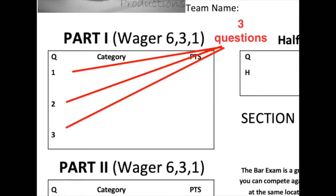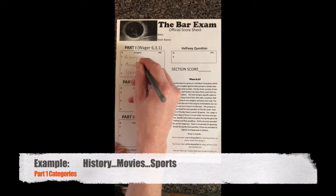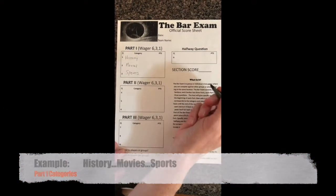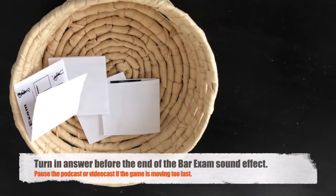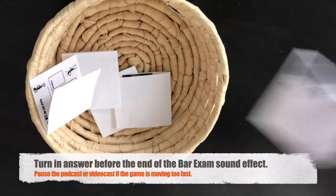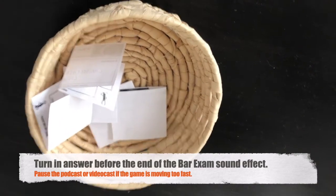We begin each part by reading aloud three categories, then ask a question pertaining to one of those categories, and play this sound effect. You have until the end of that sound effect to submit the answer to your host or scorekeeper.